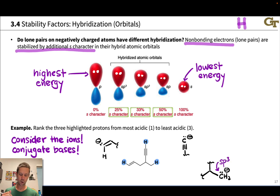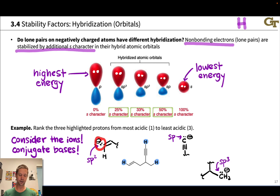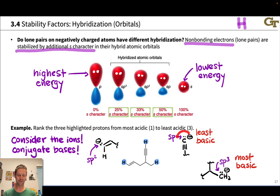The hybridizations are sp³ for the typical carbanion, sp² — notice three electron-pair domains — and sp for the alkynyl anion. Based on the s-character argument, the sp lone pair is the most stable, followed by the sp² lone pair, followed by the sp³ lone pair. This means the sp³ lone pair is the most basic and the sp lone pair is the least basic. The sp lone pair is the lowest energy and least reactive; the sp³ lone pair is the highest energy and most reactive.